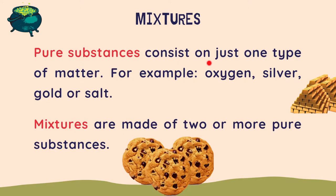Pure substances consist of just one type of matter. For example: oxygen, silver, gold, or salt.